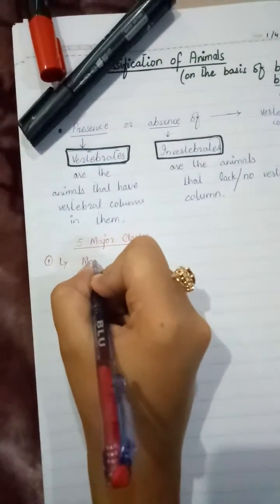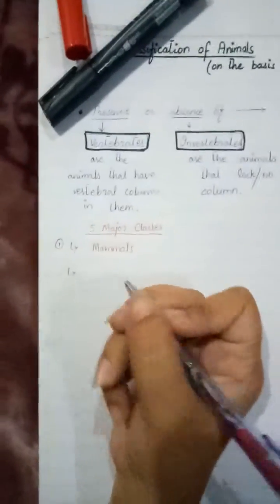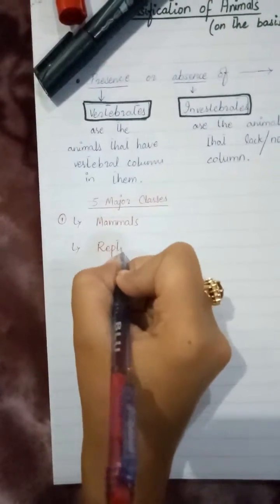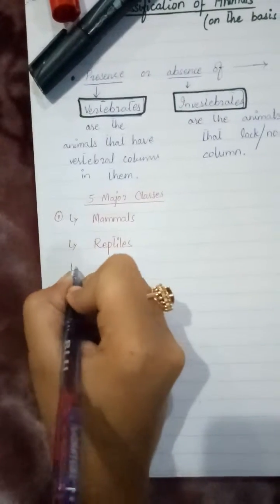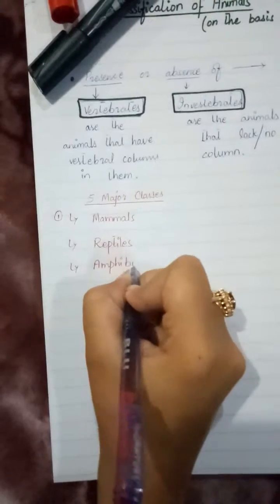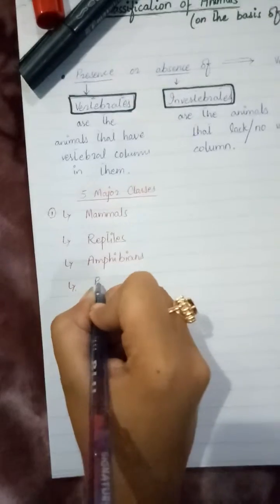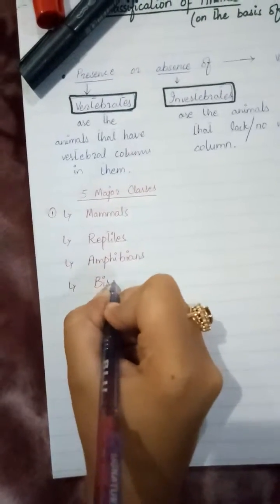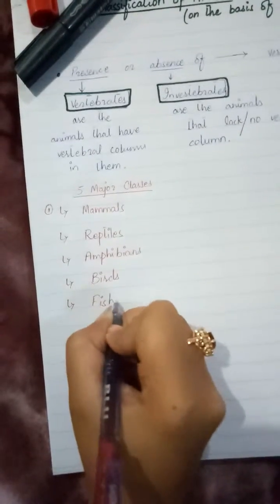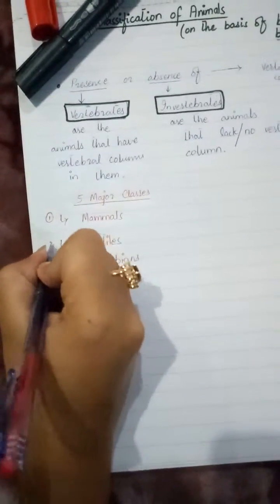Mammals, reptiles, amphibians, birds, and fishes. The word fishes stands for different species of fishes.